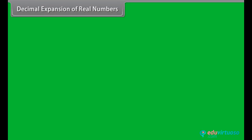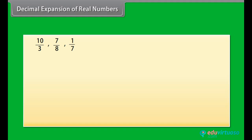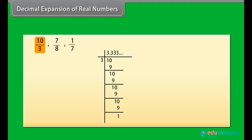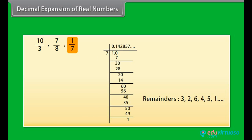We have learnt about real numbers. Now we will look at the decimal expansion of real numbers. By this expansion, we can distinguish between rationals and irrationals. Let us first take rational numbers. We will find the decimal expansion of three numbers. On decimal expansion of 10 by 3, we get remainders 1, 1, 1, 1, 1, 1. Similarly, the decimal expansion of 7 by 8 gives remainders 6, 4, 0. And the remainder of 1 by 7 is 3, 2, 6, 4, 5, 1.